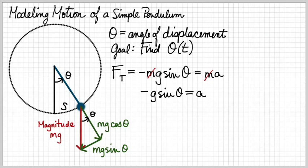Now I'm going to do a second computation. If the string here has length L, then the displacement S is equal to L times theta. I'm using the formula for arc length for that. Let's take the derivative with respect to t twice. We get d squared S over dt squared equals L times d squared theta over dt squared.